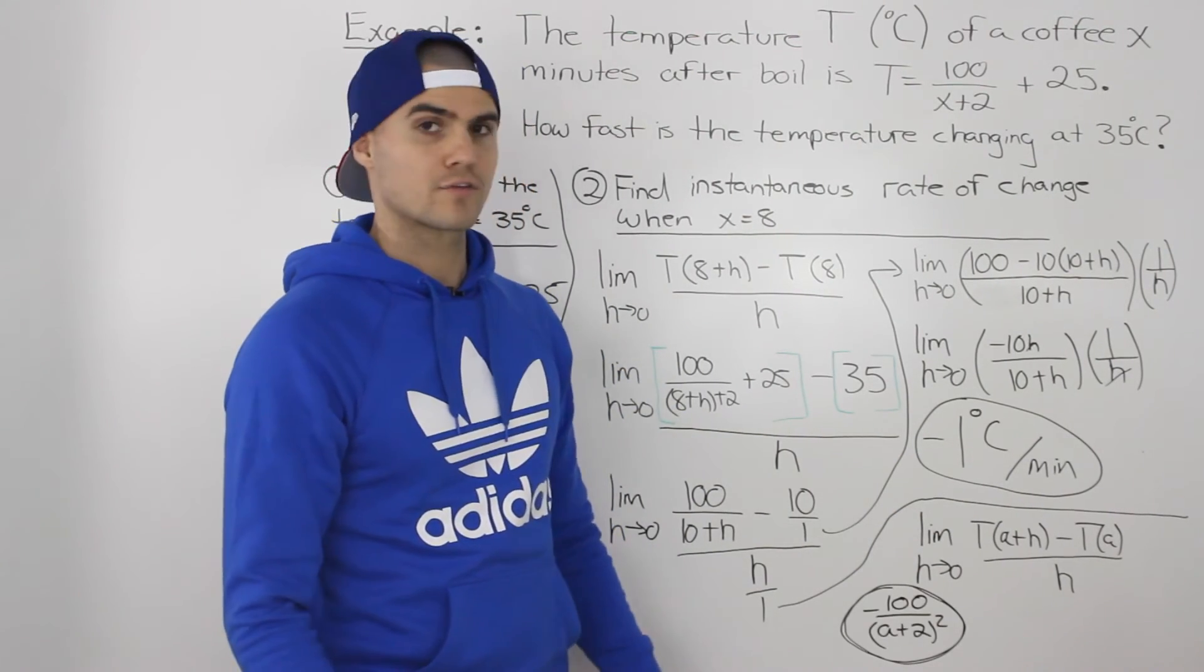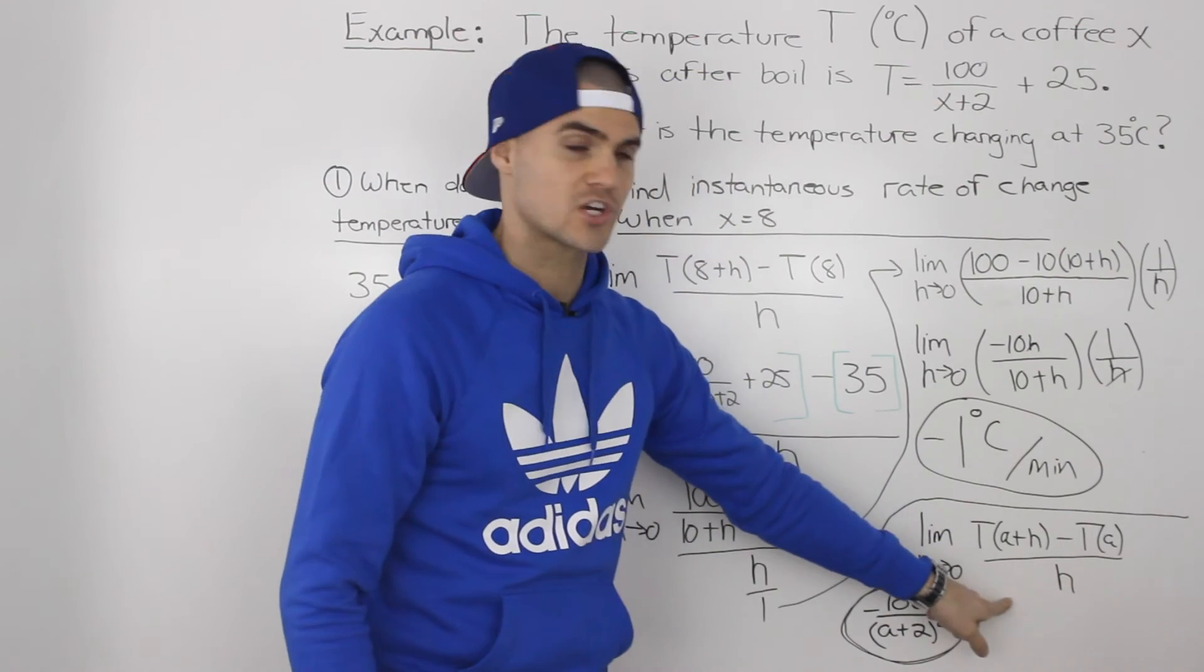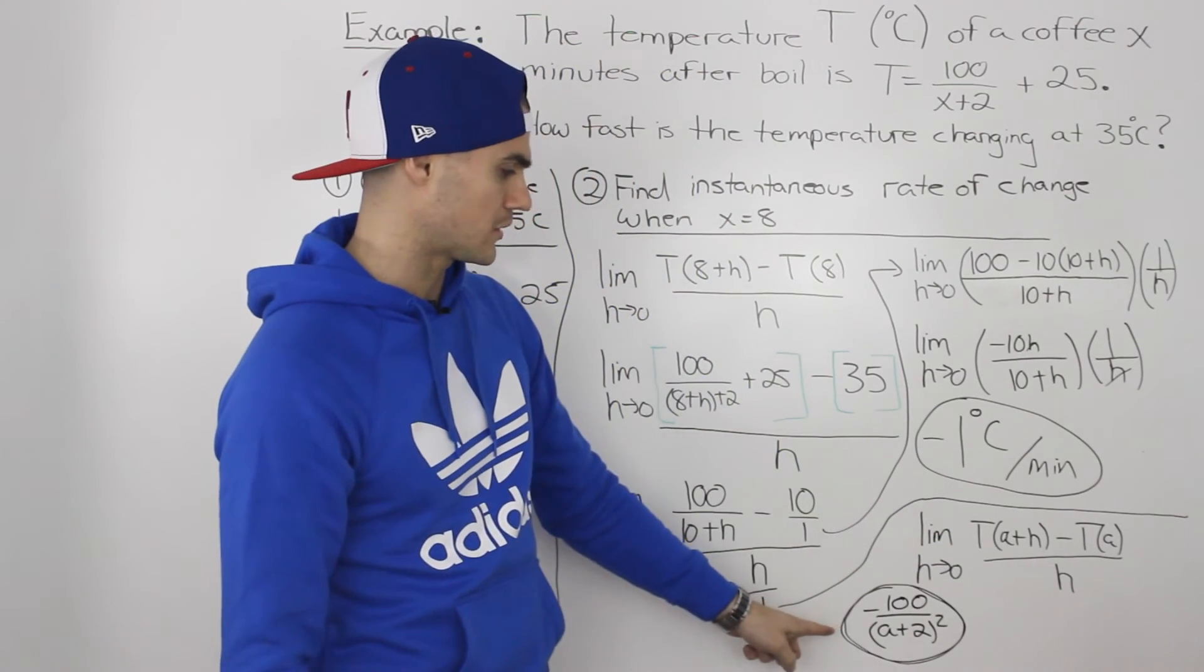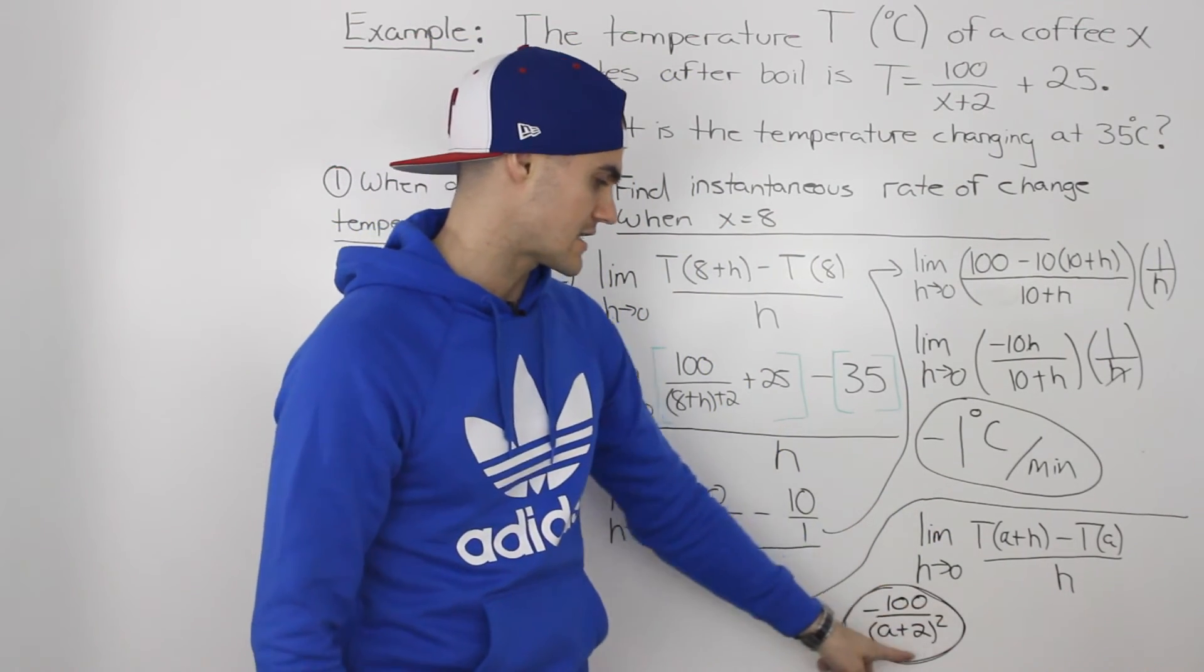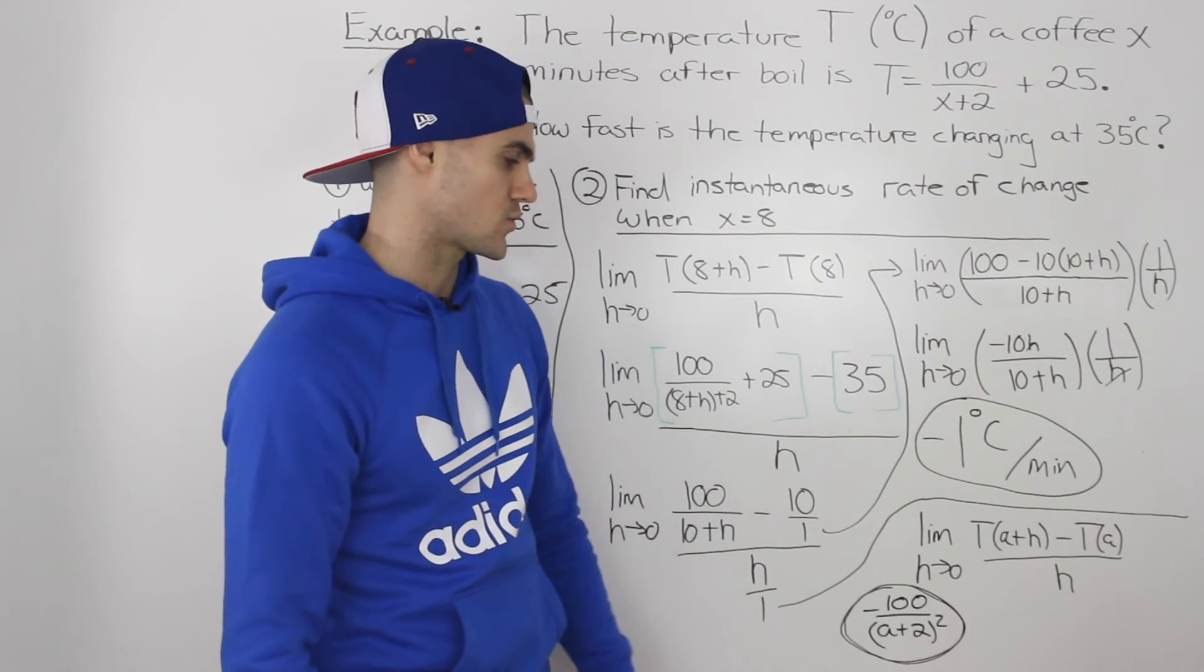And actually, if you want a reference to see if you would do this general formula right, the general formula that you should get at the end is this negative 100 over a plus 2 squared.